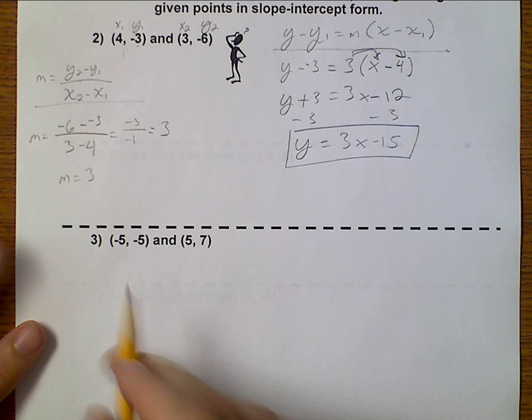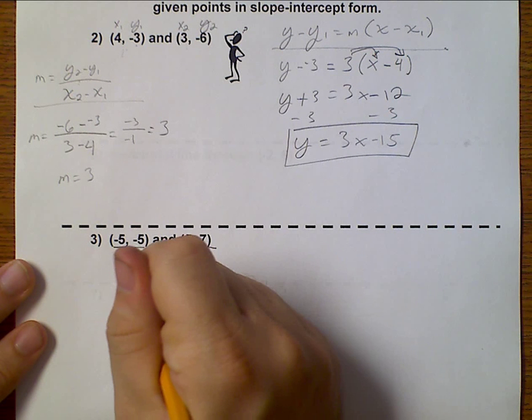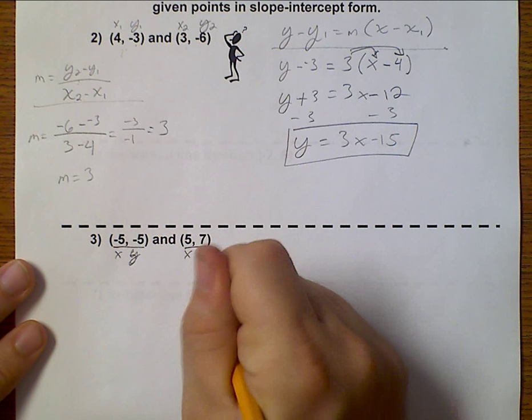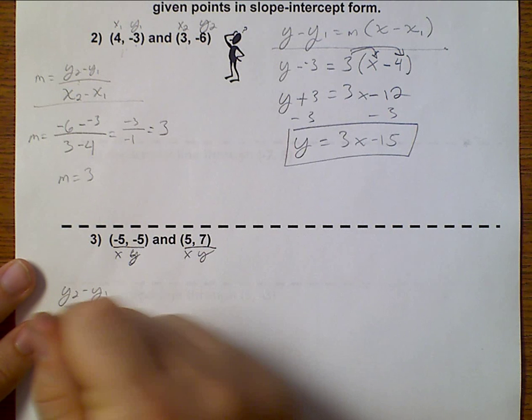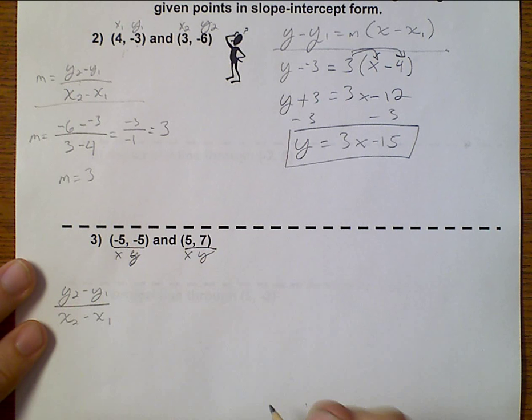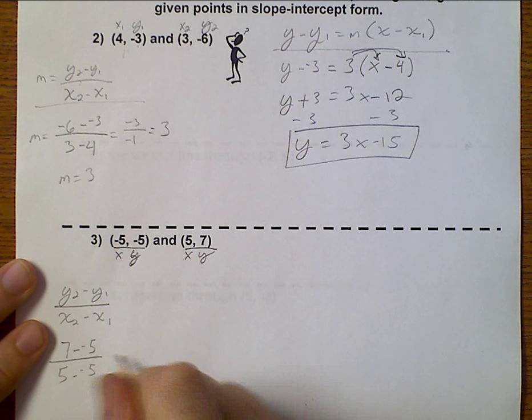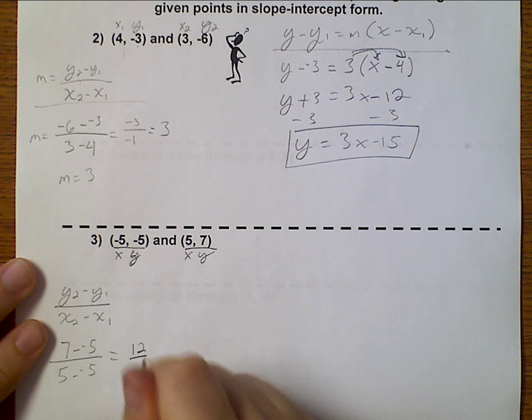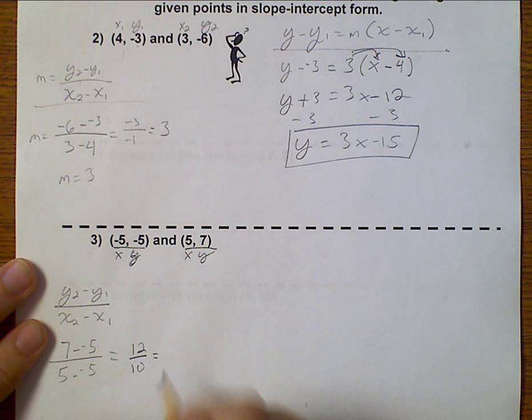Let's move on to example number 3. Here we're told (-5, -5) and (5, 7). So x and y, and x and y. So we want to start off with y2 minus y1 over x2 minus x1. So 7 minus negative 5 over 5 minus negative 5. And 7 minus negative 5 is 12, and 5 minus negative 5 is 10. And when we simplify 12 over 10, we will get 6 fifths.